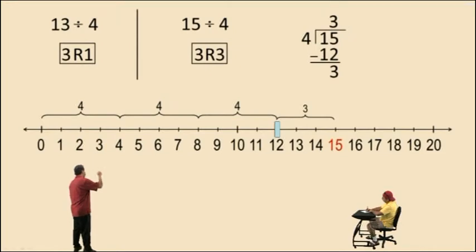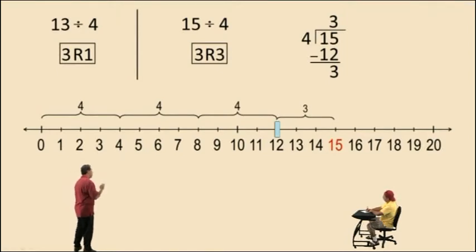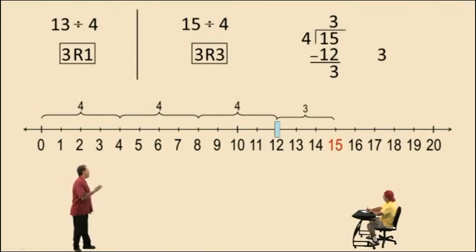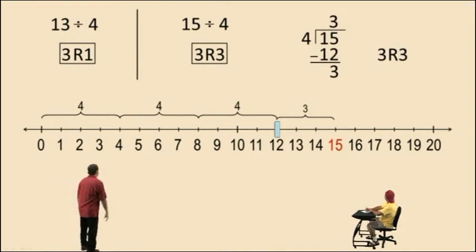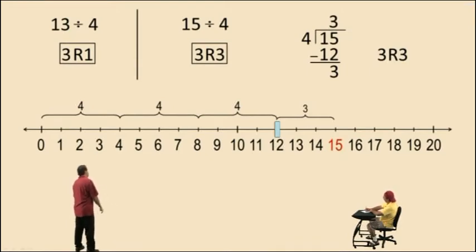And remember, when your remaining units are less than the number you're trying to divide into — which in this case is that 4 — you stop and write your answer. So 3 whole 4's go into 15, but we have a remainder of 3 units. And that's our answer.